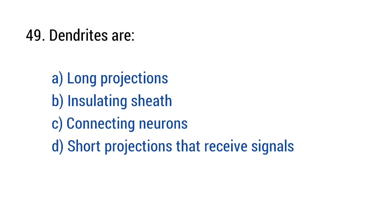Question number forty-nine. Dendrites are? The right answer is option D: Short projections that receive signals.